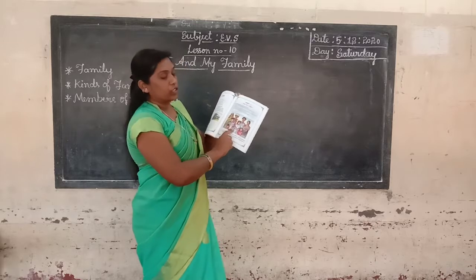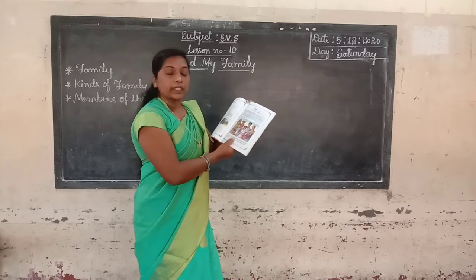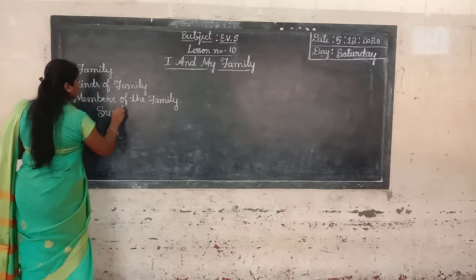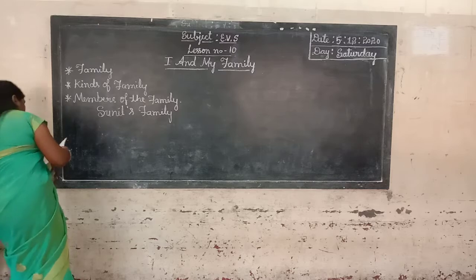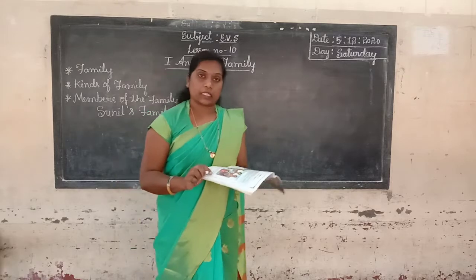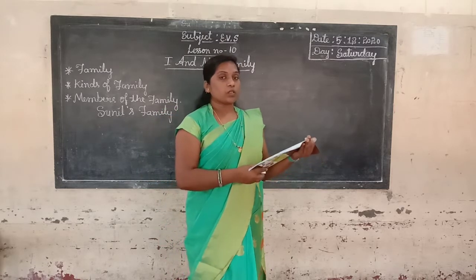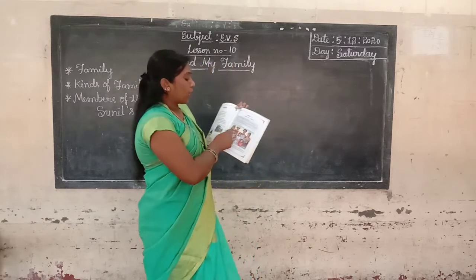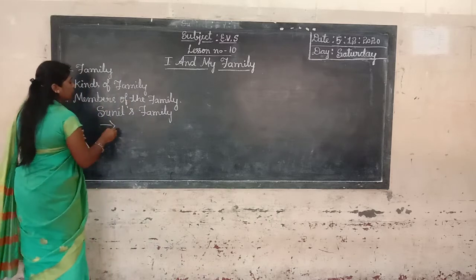Students, look at the picture. This is the picture of Sunil's family. So now let's identify who is living in Sunil's family. So who is he? He is Sunil's grandfather — grandpa. These are Sunil's family members.